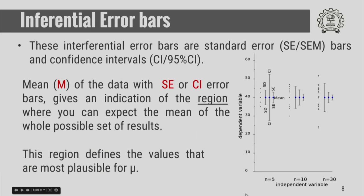The standard error and confidence interval are shown for a set of data points for n equals 5, n equals 10, and n equals 30. You can clearly see that as you increase your sample size from n equals 5 to n equals 10 to n equals 30, your standard error bar is decreasing. Similarly, your confidence interval is decreasing as the sample size increases.